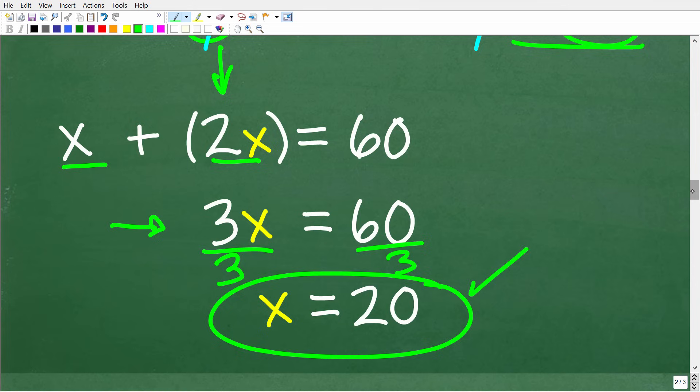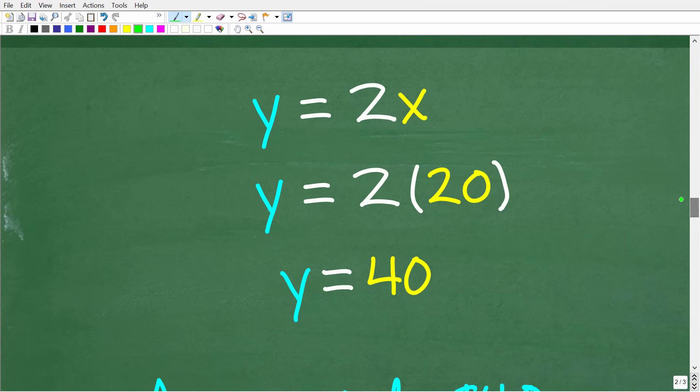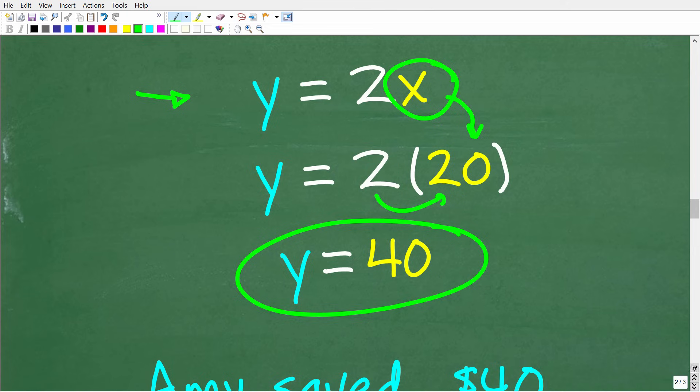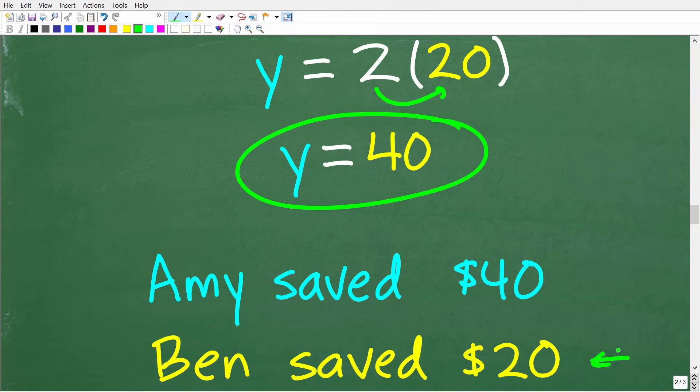Now let's go ahead and figure out what Y is equal to. So we can use that other equation, Y is equal to 2X. And we know now that X is equal to 20. So we can replace this X with 20. So Y is equal to 2 times 20, or 40. So what is X and Y? So remember X is the amount that Ben saved, and of course that is 20. X is equal to 20, and Y is equal to 40. That is the amount that Amy saved.